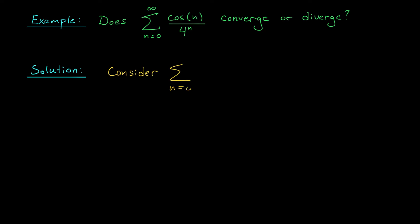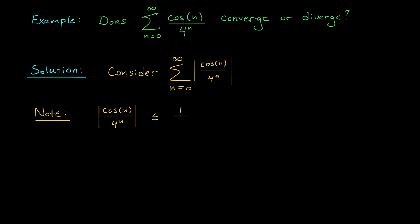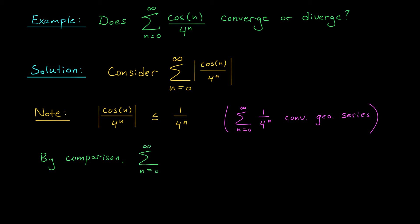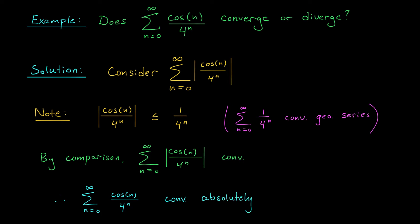Consider the sum from n equals 0 to infinity of the absolute value of cos(n) over 4^n. This is a series with positive terms, which unlocks some of our other convergence tests. In particular, the comparison test will be especially useful. We can say that the absolute value of cos(n) over 4^n is less than or equal to 1 over 4^n. The sum of terms 1 over 4^n is a convergent geometric series. So by comparison, the sum of the absolute value of cos(n) over 4^n must converge. That is, our original series — the sum from 0 to infinity of cos(n) over 4^n — converges absolutely. Since any absolutely convergent series is also convergent, our original series converges.